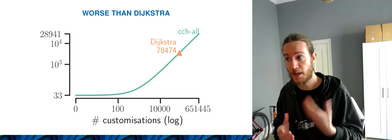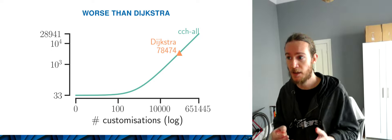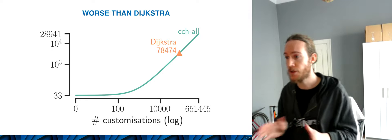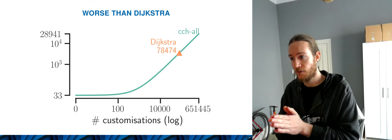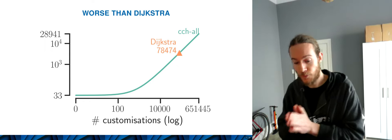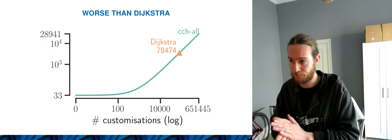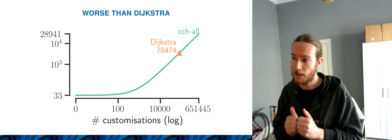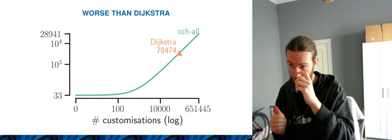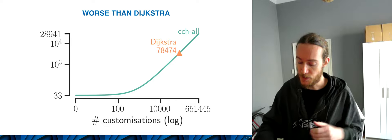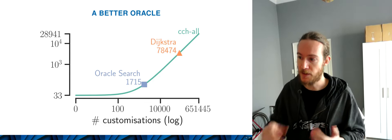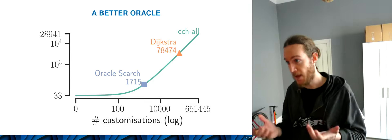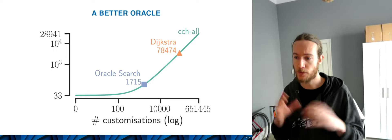At some point it is actually faster to use just Dijkstra — no pre-computation at all — and just route our demands. That occurs at around 78,000 repairs needed. So we started looking into having a method that doesn't need repairs and could be faster. We've developed something called Oracle Search.